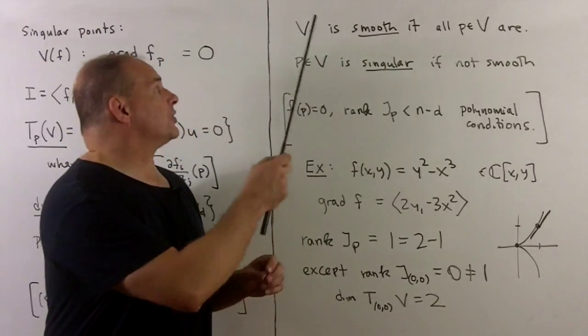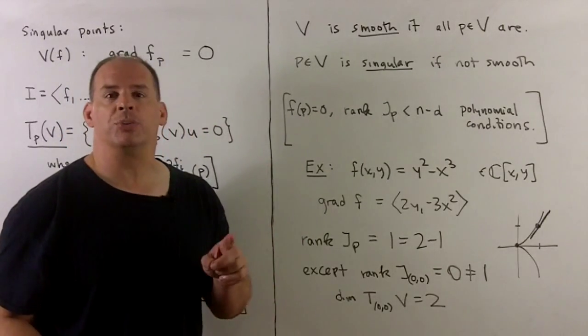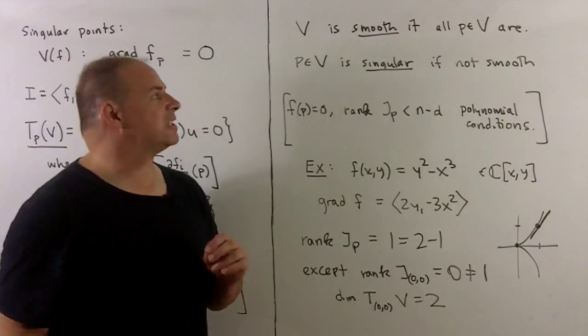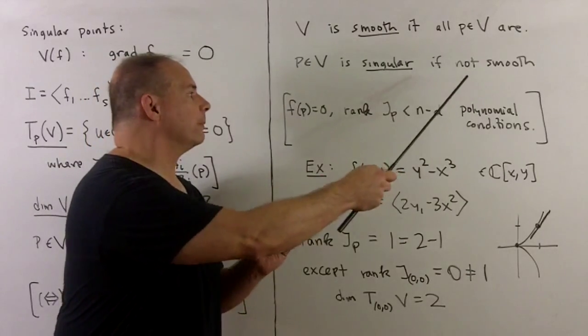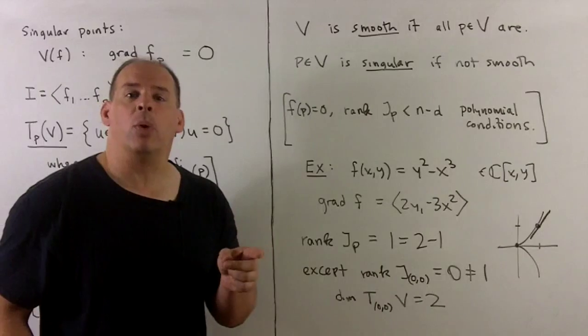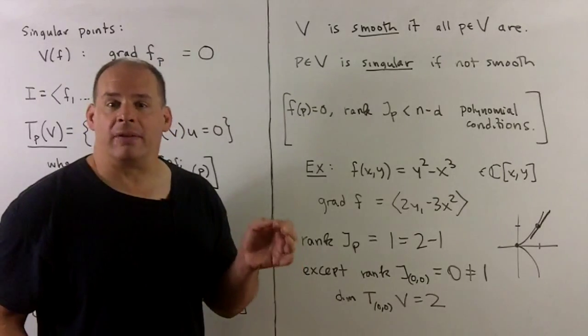I'll say our variety is smooth if all of its points are smooth, and we'll call a point singular if it's not smooth. If we collect all the singular points, they also form an affine variety.